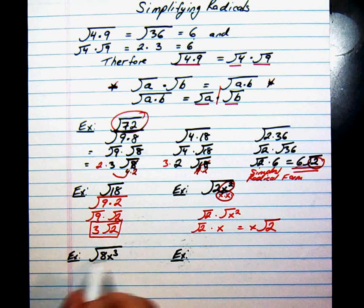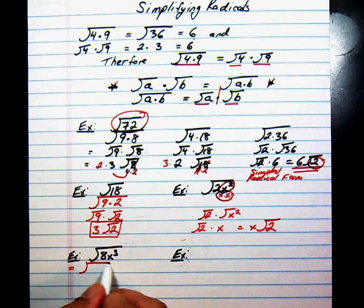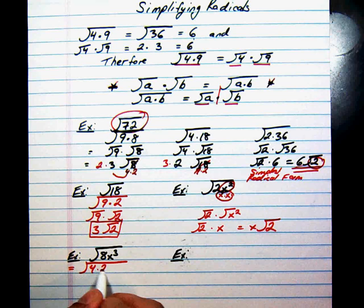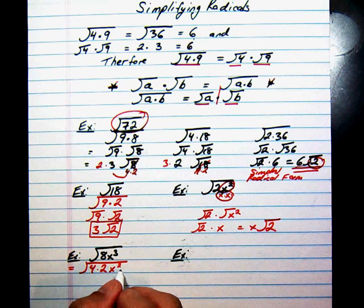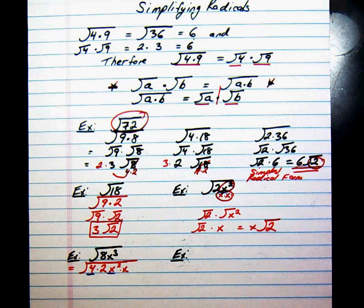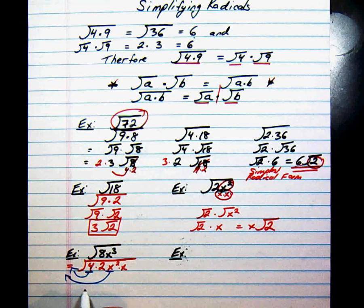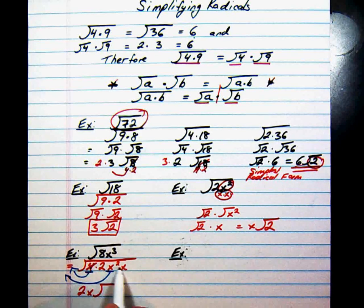Now let's look at the square root of 8x², which is a little more challenging. It helps to stretch it out with all your factors to identify your perfect squares. Breaking it up as 4 times 2 times x², we can identify the perfect square factors: there are two of them, 4 and x². We can bring out the 4 as a 2 and x² as x, leaving 2x underneath. So the result is 2x times the square root of 2x. That's completely simplified.